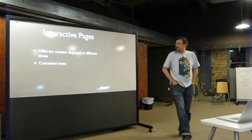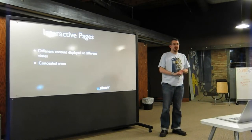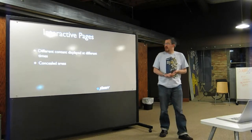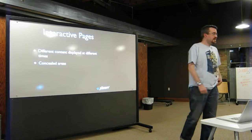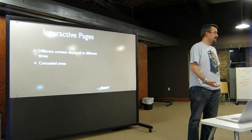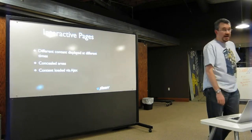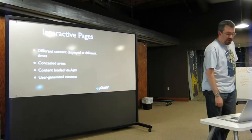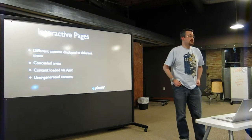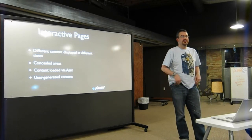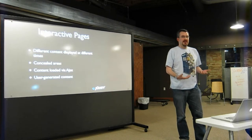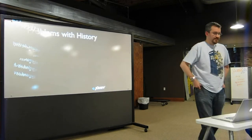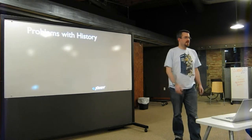On interactive pages on the web you'll have different content on the page displayed at different times. This can happen for a few reasons. You could have concealed areas on your page displayed from an accordion or tab technique. You could have content that's not actually on the page at all that you load later with Ajax. Or you could have content that actually comes from the user due to something they type into a field, or in some way they create something you didn't even anticipate ahead of time.